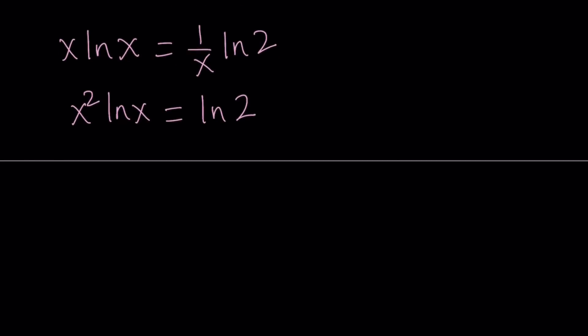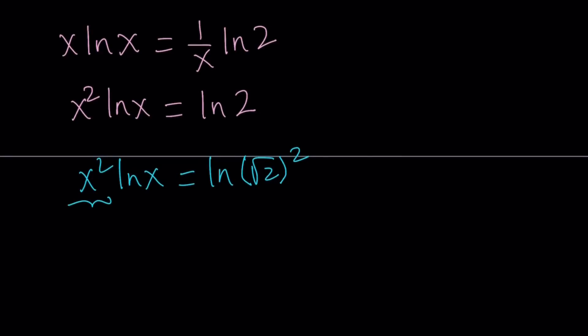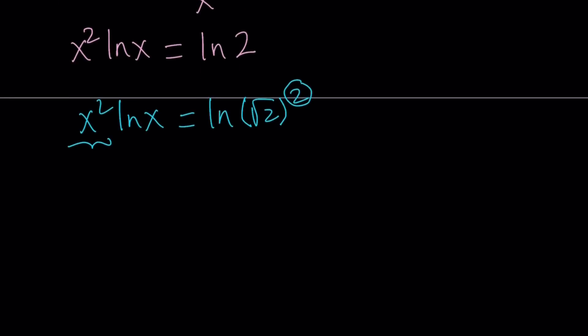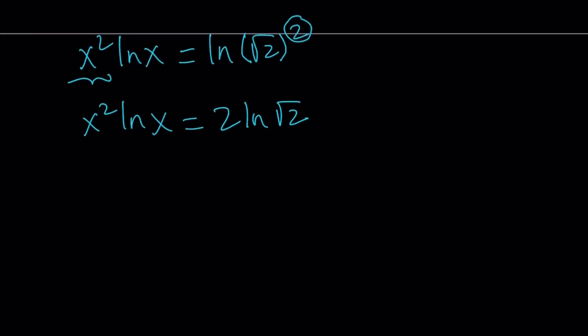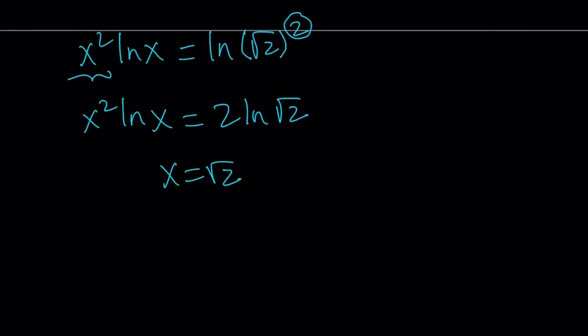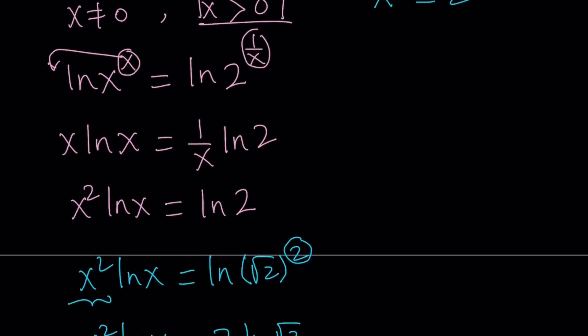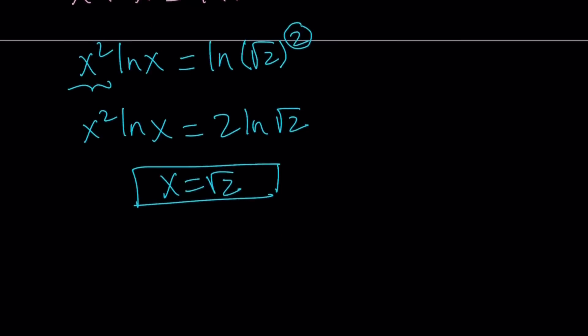Now, this equation is nice because we have all the variables on the same side. But I have ln x and ln 2, which don't match up directly. I'm going to write the 2 as square root of 2 squared, and the motivation behind that is I need an additional number here that is a perfect square. So the next step is moving the 2 to the front: x squared ln x equals 2 ln square root of 2. If you notice that x equals square root of 2 works, then you're good. By comparing these two expressions, x equals square root of 2 is a possible solution. If you plug it into the original equation, you'll notice it works as well.